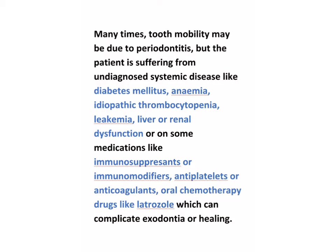Many times tooth mobility may be due to periodontitis itself, but the patient may be suffering from undiagnosed systemic diseases like diabetes mellitus, anemia, idiopathic thrombocytopenia, leukemia, or liver and renal dysfunction. Or the patient may be taking medications like immunosuppressants, immunomodifiers, antiplatelets, anticoagulants, or oral chemotherapy drugs like letrozole. Any of these can complicate mobile tooth exodontia as well as its healing.